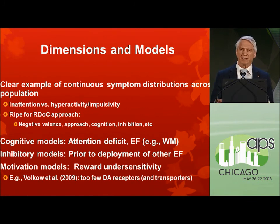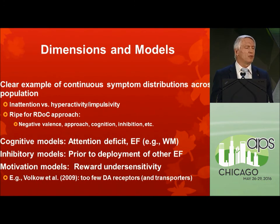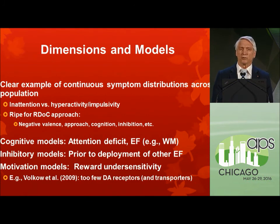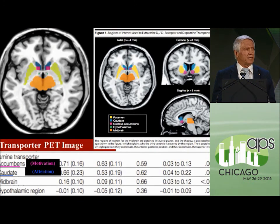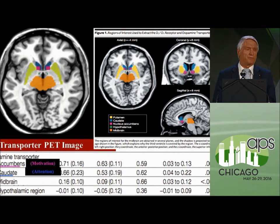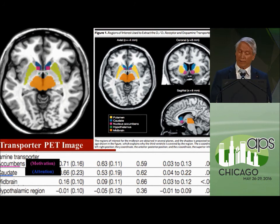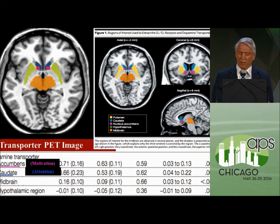An older model of ADHD is that it's a motivational deficit involving dopamine centers deep in the brain. This was given new life by Nora Volkow's important study in JAMA looking at about 70 adults with ADHD — never medicated — and 60 matched controls. The never-medicated adults showed 40 percent fewer receptors for dopamine in the striatum and related regions, and about 35 to 40 percent fewer transporters. This has revived the notion that for many individuals, ADHD may reflect difficulty sustaining motivation as well as attention, and a deficit in intrinsic motivation.